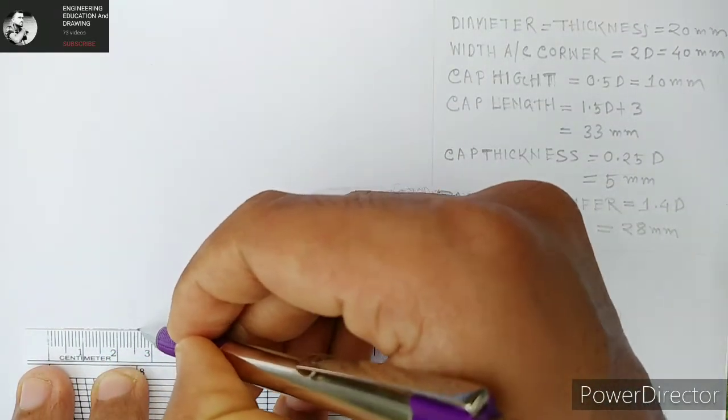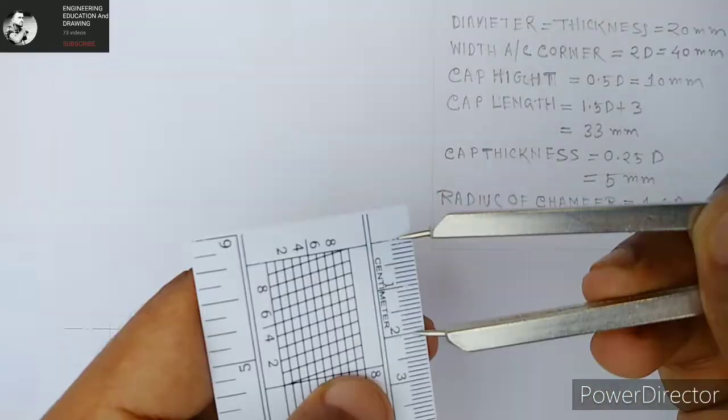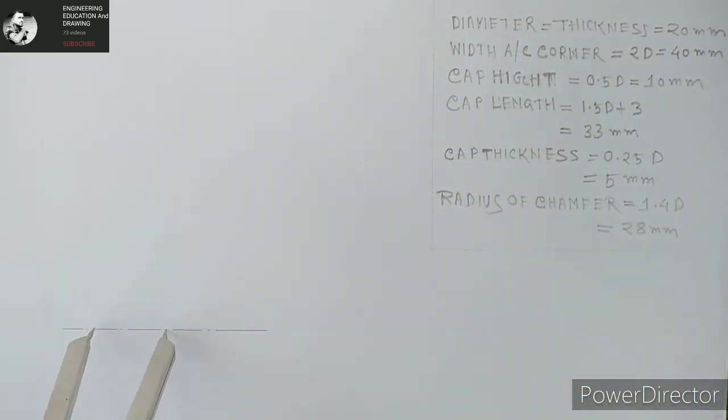So what we're going to do is make a thin chain line with the help of a scale.